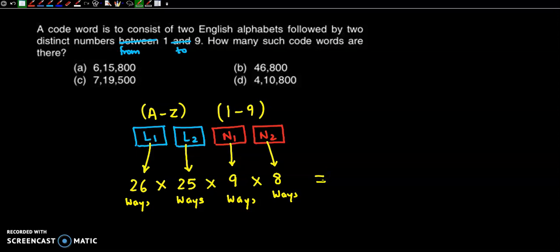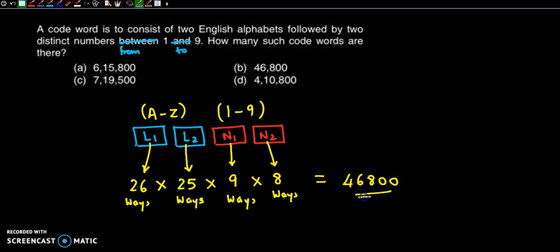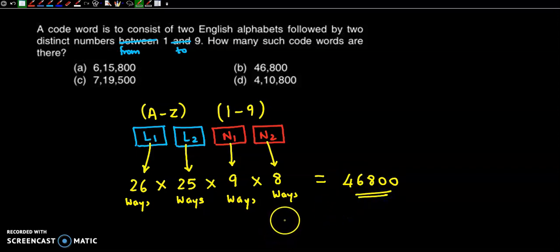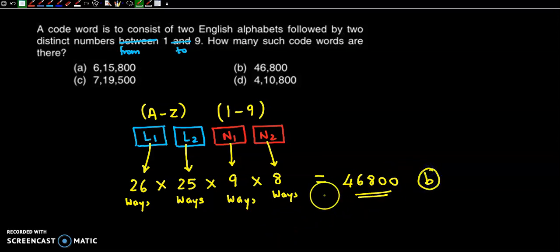So 26 × 25 × 9 × 8 = 46,800. We can form 46,800 code words. The correct answer is option B.